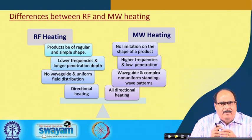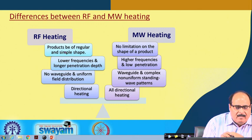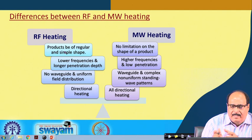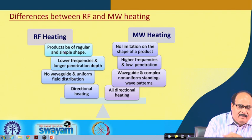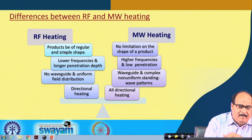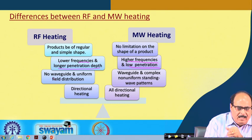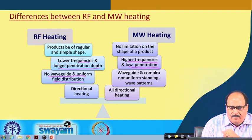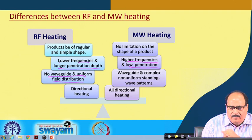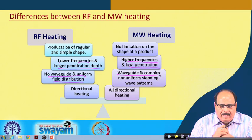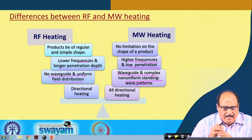Let us briefly compare RF and microwave heating. The RF heating product should be of regular and simple shape, whereas in microwave heating there is no limitation on the shape of the product. In RF heating, normally lower frequencies and longer penetration depth are used; in microwave, higher frequencies and lower penetration depth are involved. In RF heating there is no waveguide and there is uniform field distribution, whereas in microwave heating there is a waveguide and complex non-uniform standing wave patterns. RF heating is normally one-directional heating, while microwave heating is uniform all-directional heating.